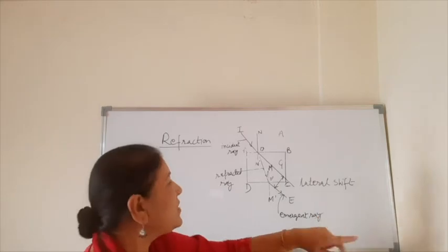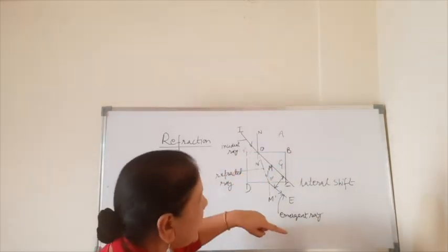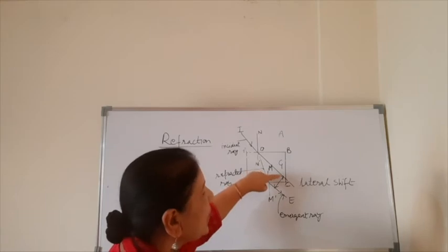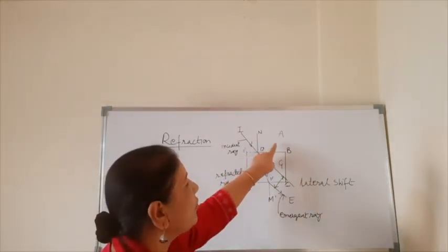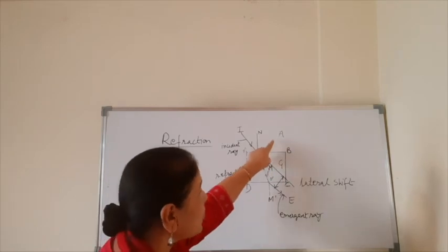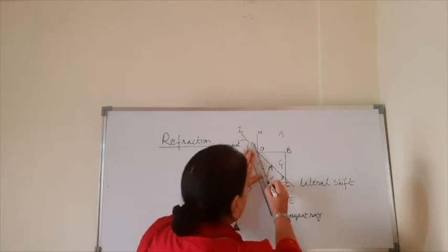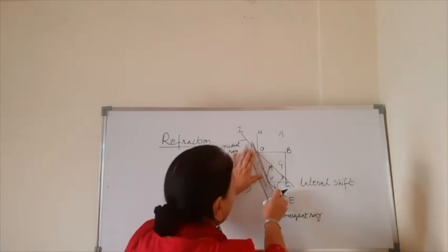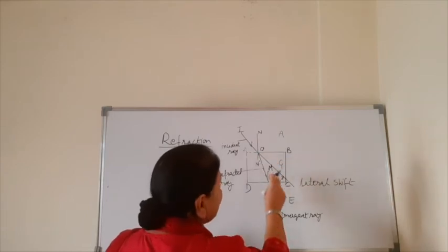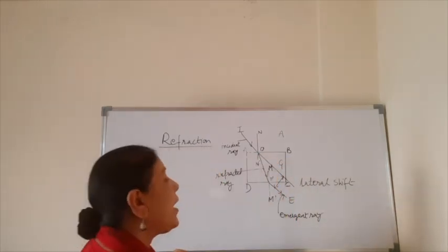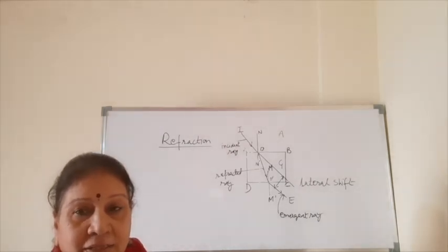Refraction happens at two interfaces: first between air and glass, and second between glass and air. When moving from optically rarer to denser medium, the ray bends towards the normal. When coming out from optically denser to rarer medium, it bends away from the normal. This is all about refraction through a glass slab.